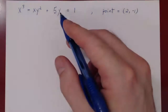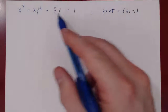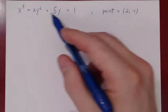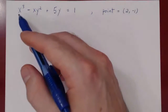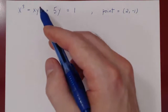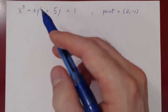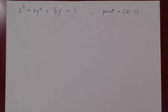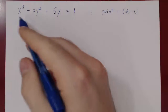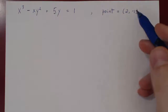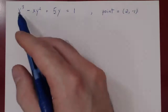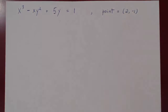This point will be on the curve if it is a solution to the equation. So we replace x by 2 and y by negative 1 in the equation. We get: 2 cubed is 8, minus 2 times negative 1 squared gives minus 2, so 8 minus 2 is 6, plus 5 times negative 1 gives 6 minus 5, which equals 1. This point satisfies the equation, so it is indeed a point on the curve.